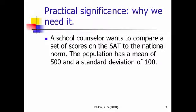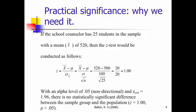A school counselor, for example, might want to compare a set of scores on the SAT to the national norm. If the population has a mean of 500 and a standard deviation of 100, the school counselor might want to take a class of 25 students with a mean of 520 and find out if the class was significantly different from the mean of the population. Recall that we could use a z-test for this. In this example, we have 25 students, there's a 20 point difference between the groups, and yet there's no statistically significant difference. The critical value in a z-test at 0.05 is 1.96, and with a z-observed value of 1, it's greater than 0.05, it's less than the critical value, there's no statistically significant effect.